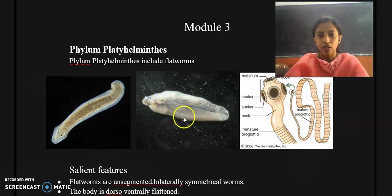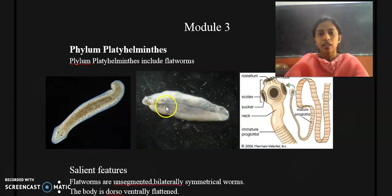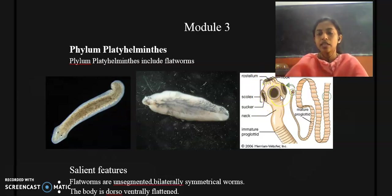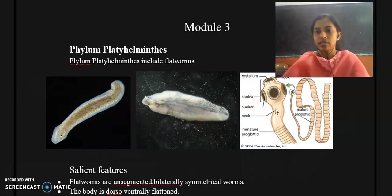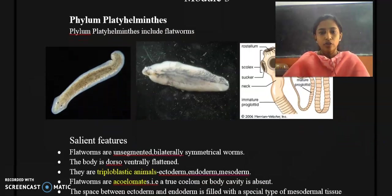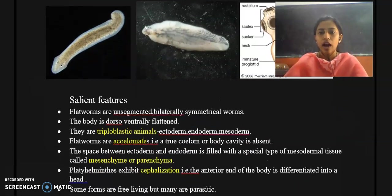Next you can see Fasciola hepatica, also known as Liver Fluke, which belongs to class Trematoda. Then next to Liver Fluke you can find tapeworm, whose scientific name is Taenia solium, and it comes under class Cestoda, which belongs to phylum Platyhelminthes. So the members are: Planaria (Turbellaria), Liver Fluke or Fasciola hepatica (Trematoda), and Taenia solium or tapeworm (Cestoda).